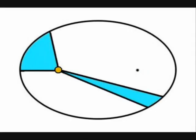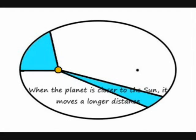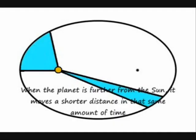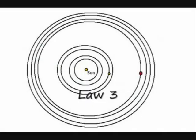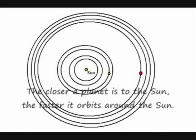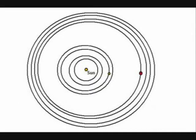Kepler's second law states that the closer a planet is to the sun, the faster it goes. The two areas represent the same time frame the planet is traveling in its orbit — the planet is traveling faster when it's near the sun, moving a longer distance and therefore faster. Kepler's third law states that the closer a planet is to the sun, the faster it orbits, so the inner planets go faster than the outer planets.